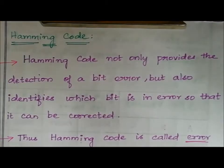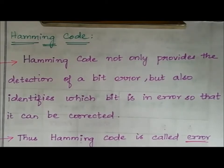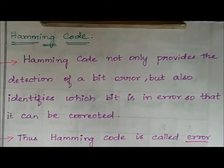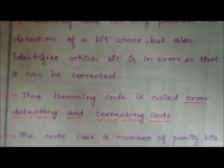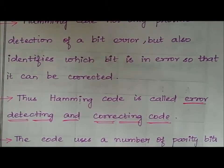The next topic is Hamming code. Hamming code not only provides the detection of a bit error but also identifies which bit is in error so that it can be corrected. So Hamming code provides both error detection and correction — it is called an error detecting and correcting code.